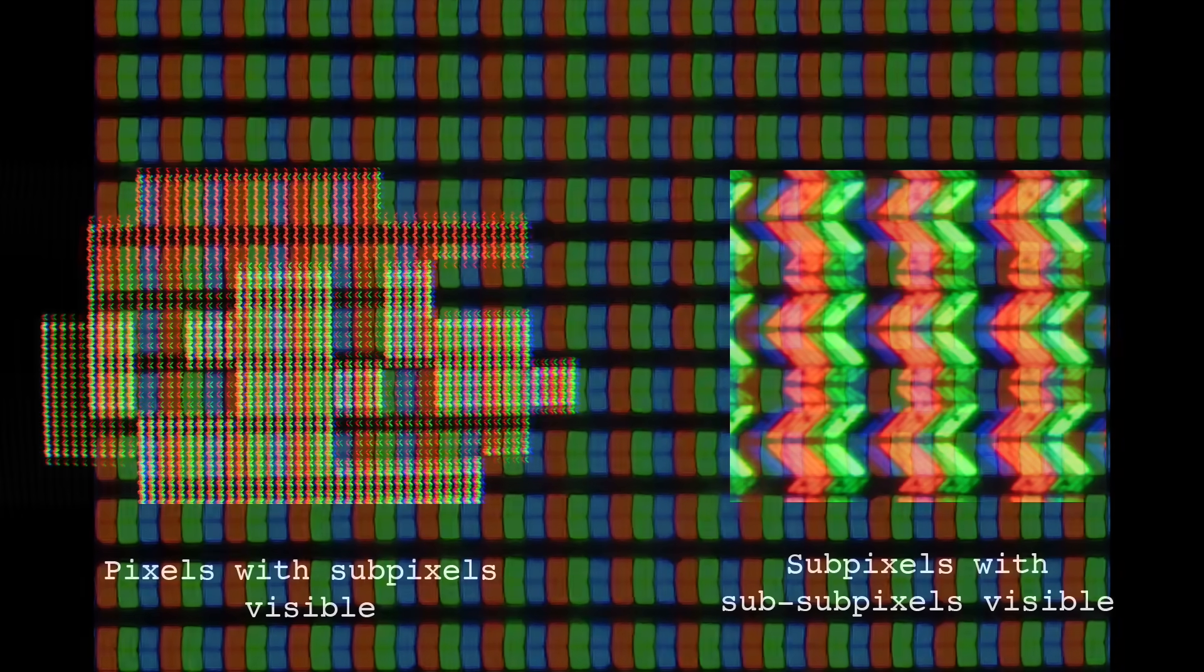you'll see that pixels are actually made up of sub-pixels, typically red, green, and blue lights. And if you look even closer, you'll see that these sub-pixels sometimes have sub-sub-pixels. But for the sake of this video, we're only interested in the sub-pixels.